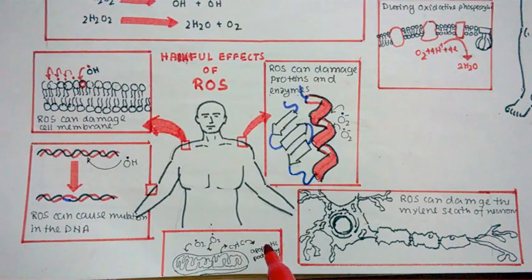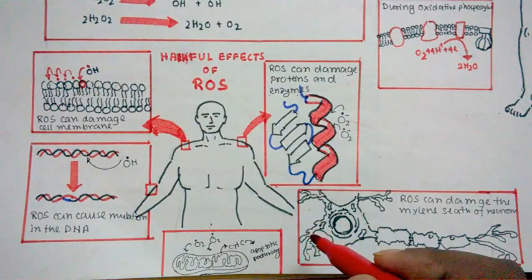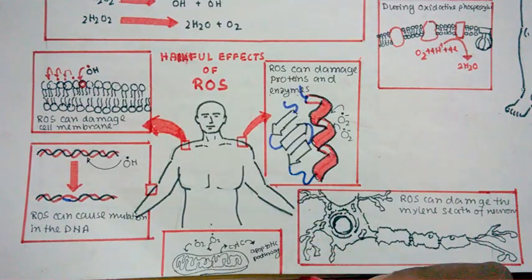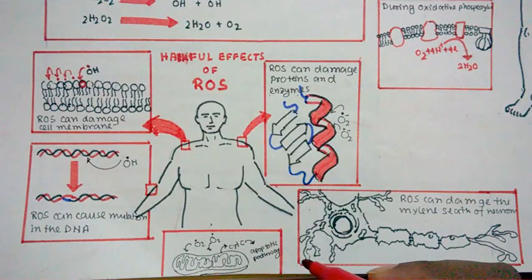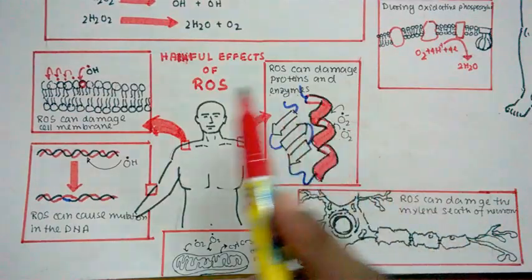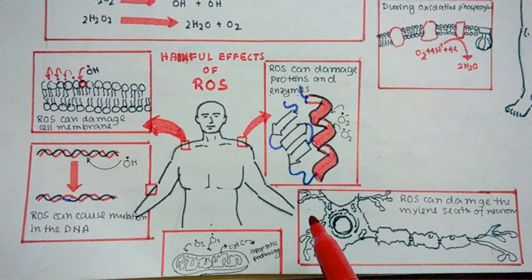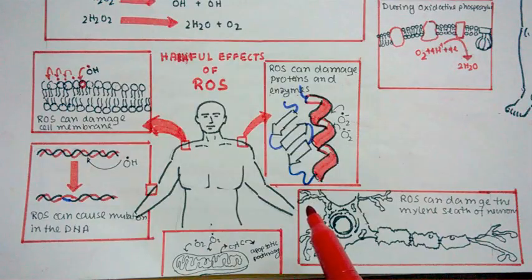And this Apaf-1 cytochrome c complex can actually activate other caspases, and a caspase cascade would go on. The ultimate fate would be cell death, programmed cell death by apoptosis. So here are some harmful effects of ROS. Apart from these, ROS is a main cause of aging and ROS can cause multiple types of disease.